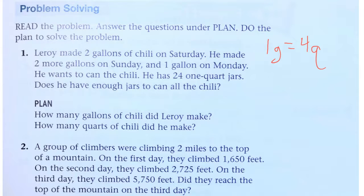We're going to put this here, put that like that. All right, so we got 2 gallons on Saturday, 2 more on Sunday, 1 on Monday. So we get 5 gallons made.